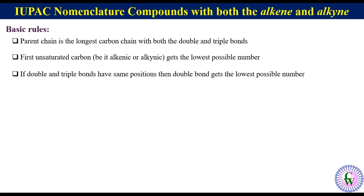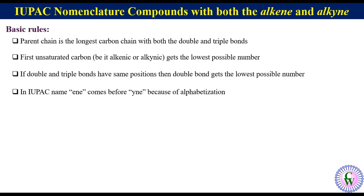If the double and triple bonds have the same position, then the double bond receives the lowest possible number. In the IUPAC name, 'ene' comes before 'yne' because 'ene' comes before 'yne' in alphabetical order.